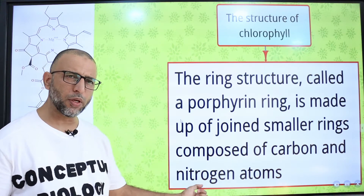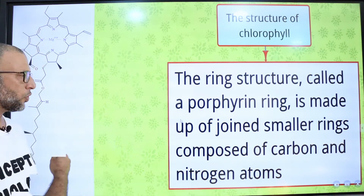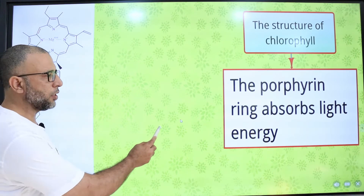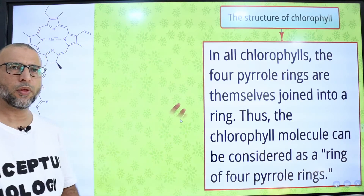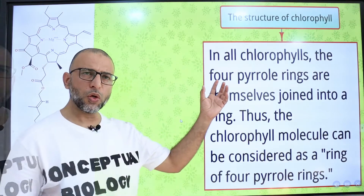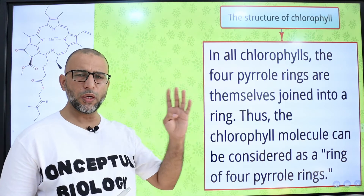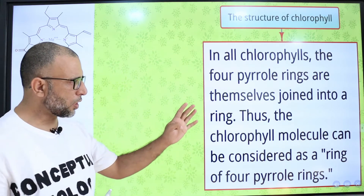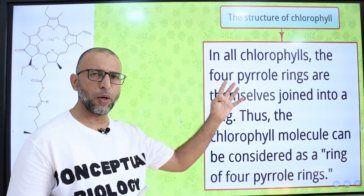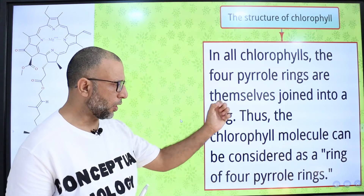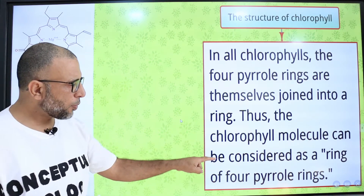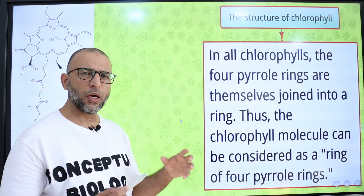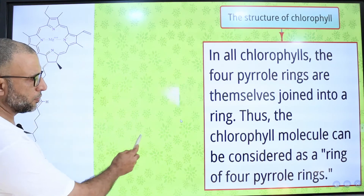The ring structure is called the porphyrin ring, and it is made up of four smaller rings composed of carbon and nitrogen atoms. The porphyrin ring absorbs light energy. Each chlorophyll molecule contains four pyrrole rings joined together to form the porphyrin ring.